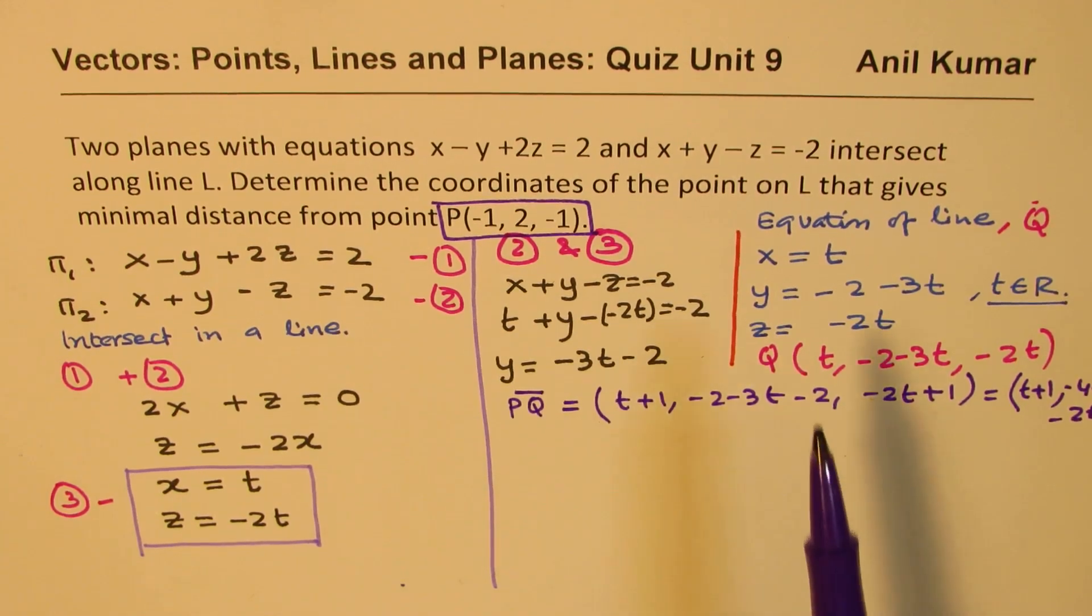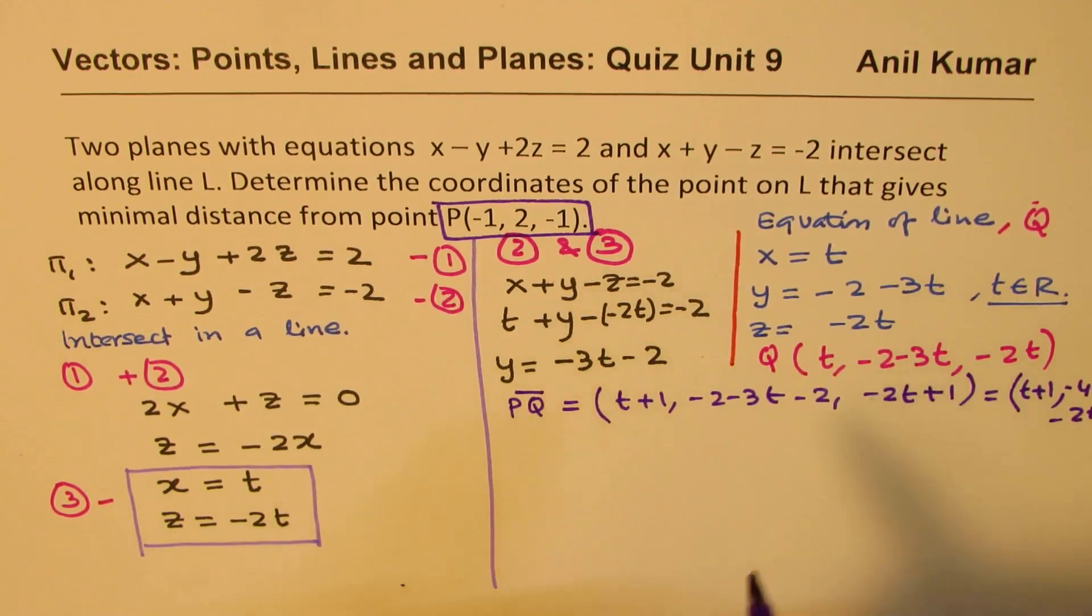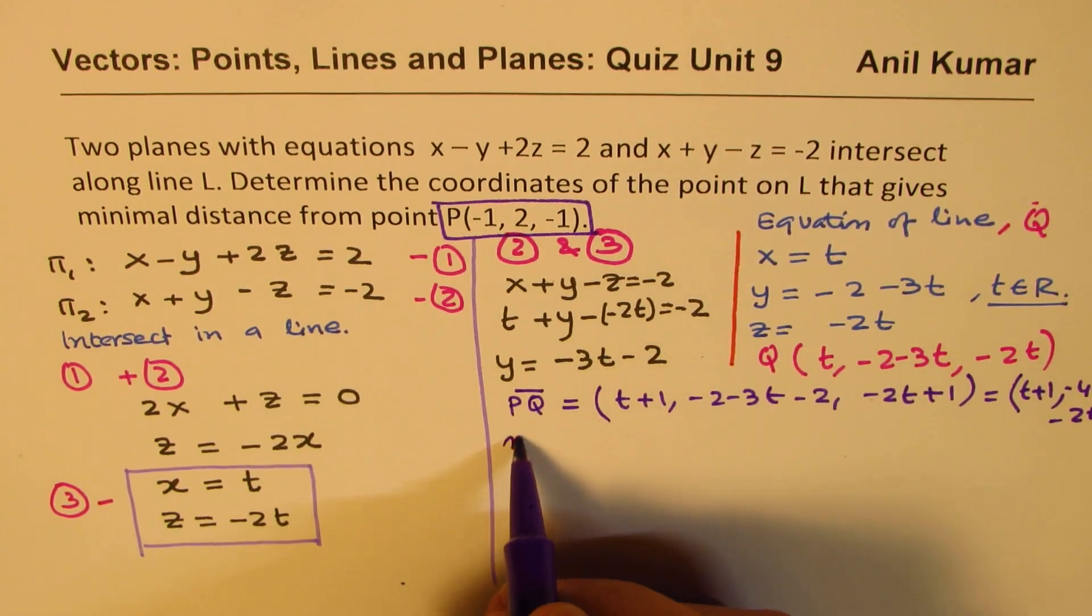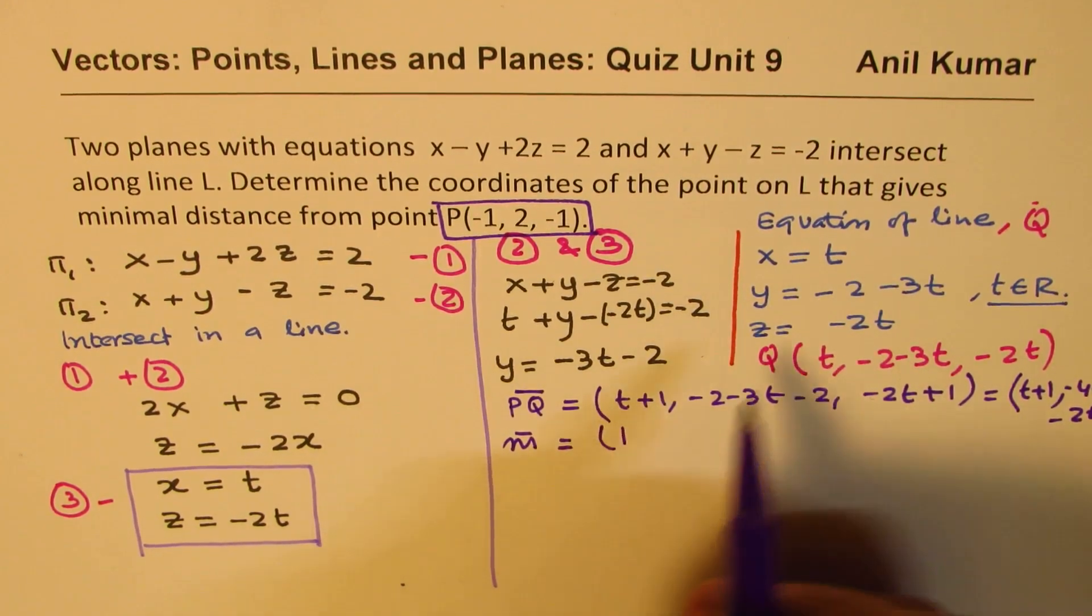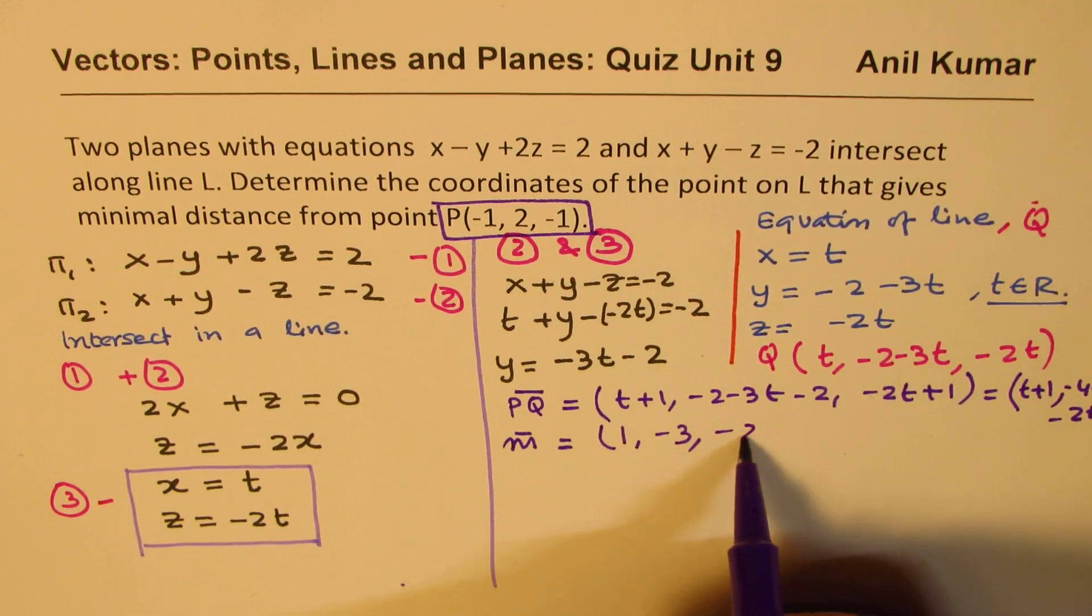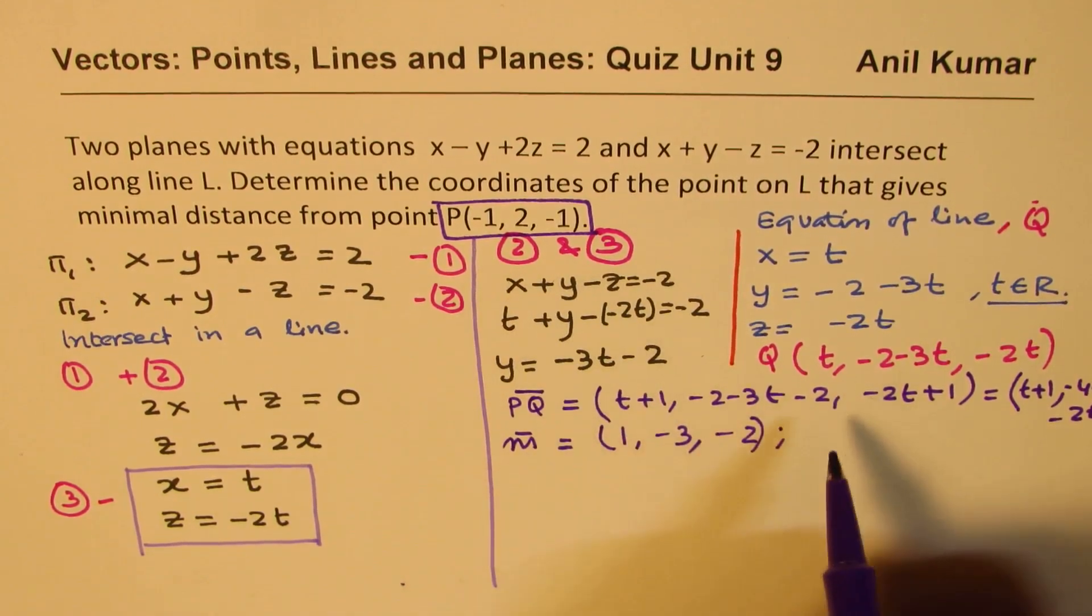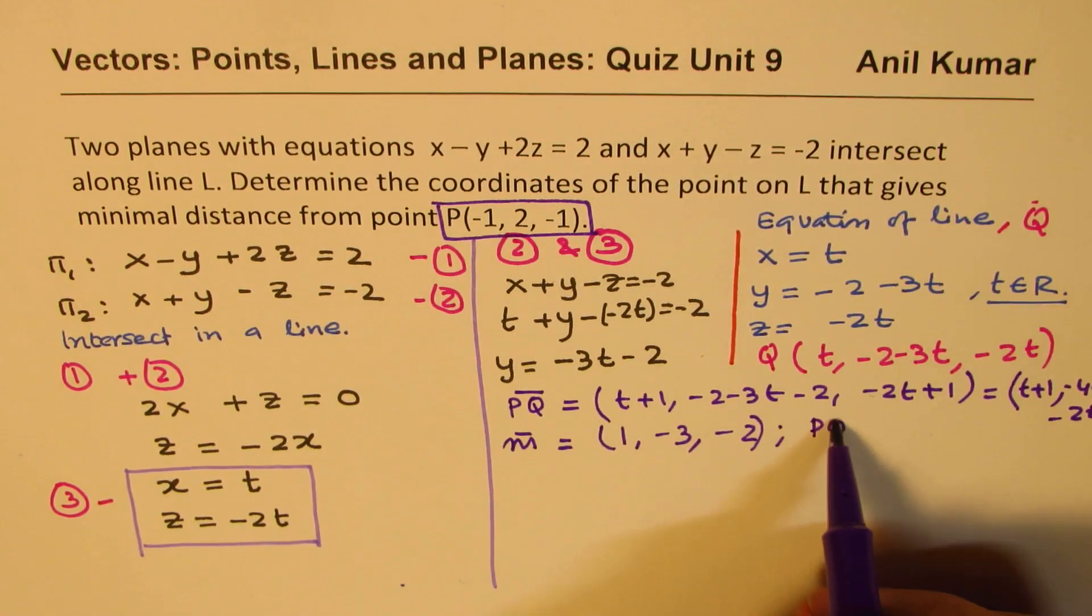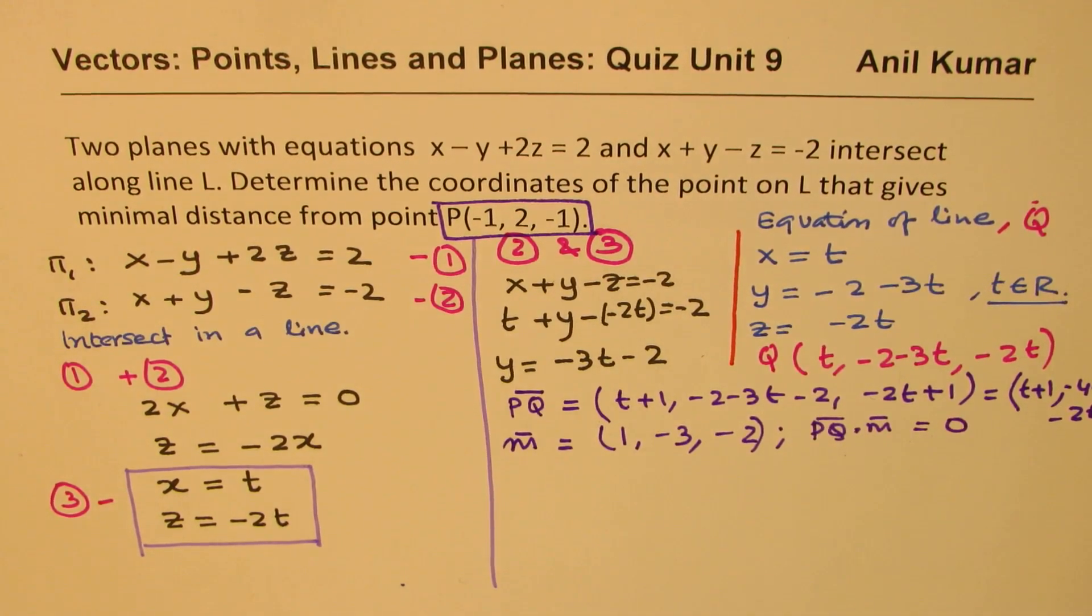The direction of the line M is (1, -3, -2). Since we want the shortest distance, PQ dot M should equal 0. That is what it is.